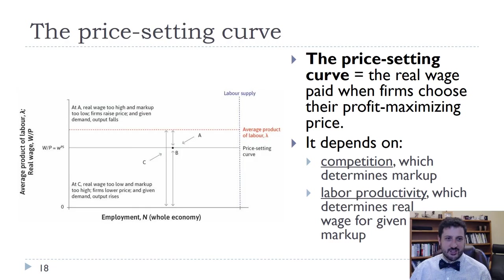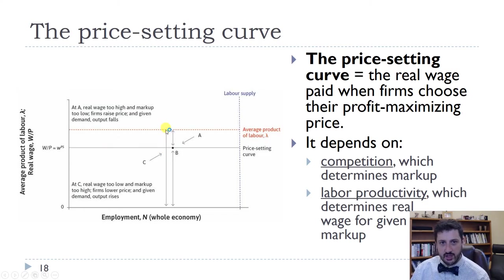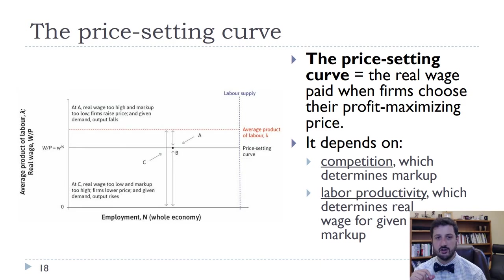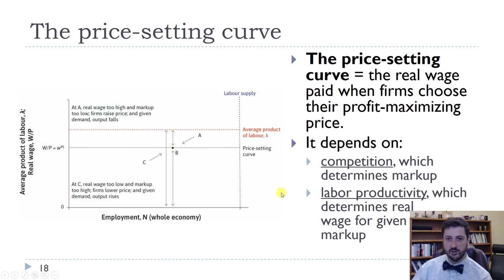If we were at point C, the wage would be too low and the markup too high — the markup being the difference between what the worker produces and what they are paid. If we were at point A, the real wage would be too high and the markup too low, so firms would raise their price and output would fall. At point B, we're at equilibrium where the markup is appropriate based on the demand curve, workers are getting their equilibrium real wage, and firms are earning their equilibrium real profit.